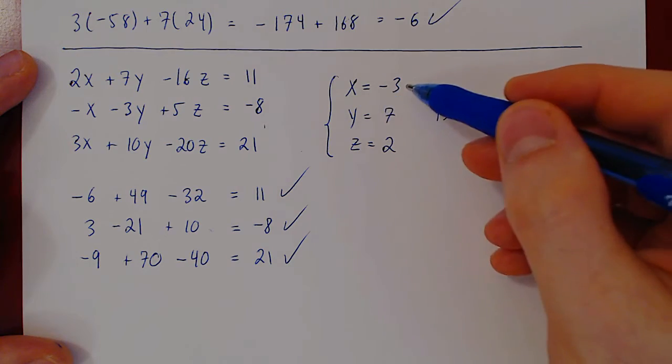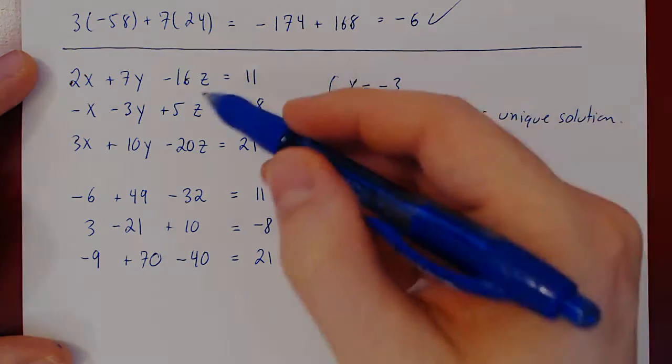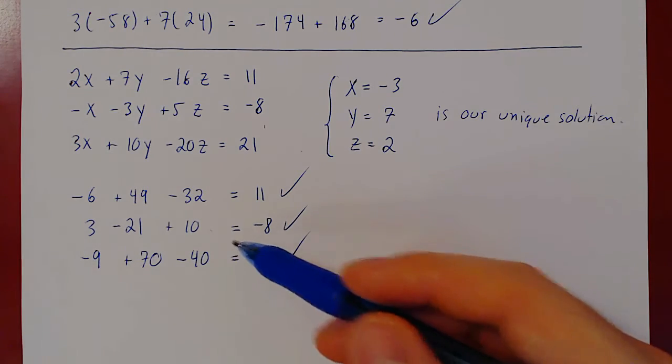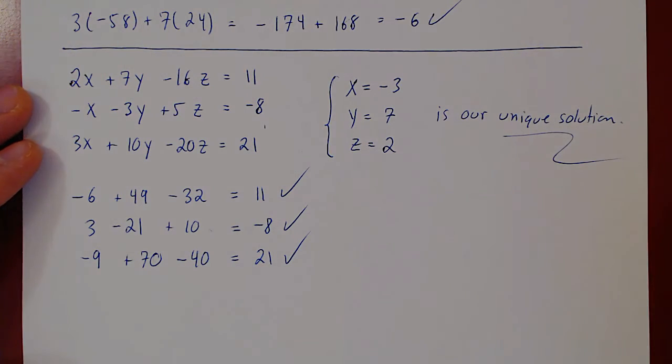So indeed, x equals negative 3, y equals 7, z equals 2 is a solution to the linear system. And it is a unique solution.